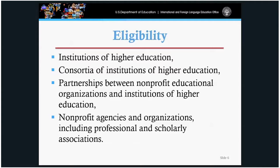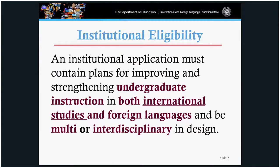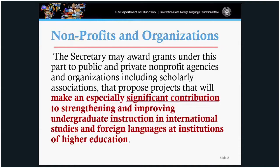Institutional eligibility. An institution's application must contain plans to improve and strengthen undergraduate instruction in both international studies and foreign languages, and be either multi- or interdisciplinary in design. Under non-profits and organizations, the Secretary may award grants to private and non-profit agencies and organizations, including scholarly organizations that propose projects making a significant contribution to strengthening undergraduate education.